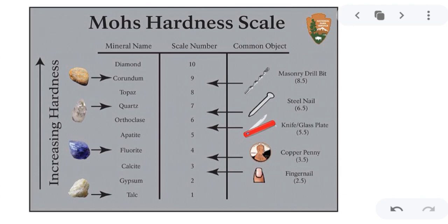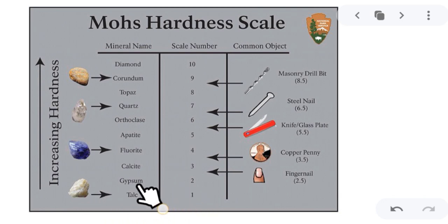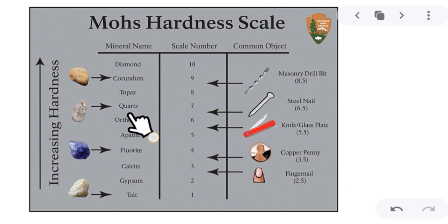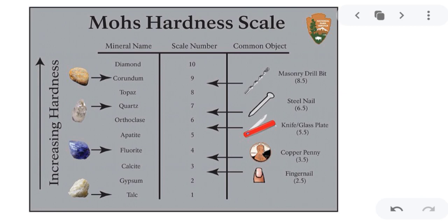On the Mohs scale, the softest mineral is talc, followed by gypsum and calcite. A fingernail can scratch minerals up to hardness 2.5. A copper penny can scratch up to 3.5 (calcite), a knife or glass plate up to 5.5 (fluorite and apatite), and a steel nail can scratch orthoclase and quartz. A masonry drill bit can scratch up to 8.5 (topaz). The hardest mineral is diamond, which can only be cut or scratched by another diamond.